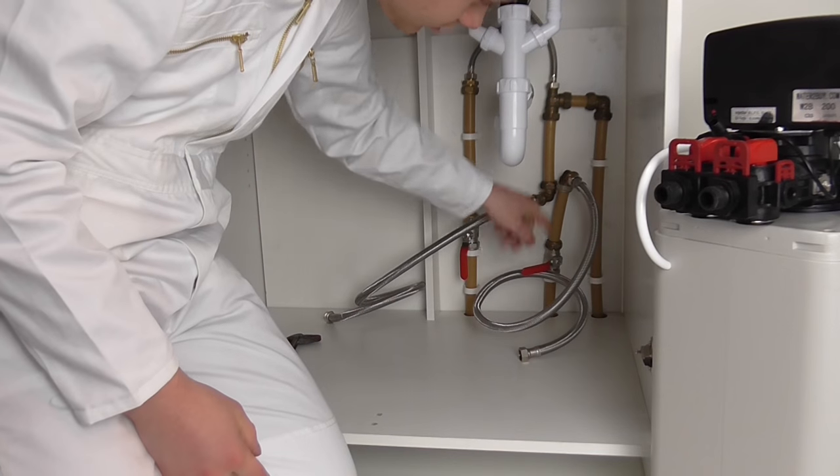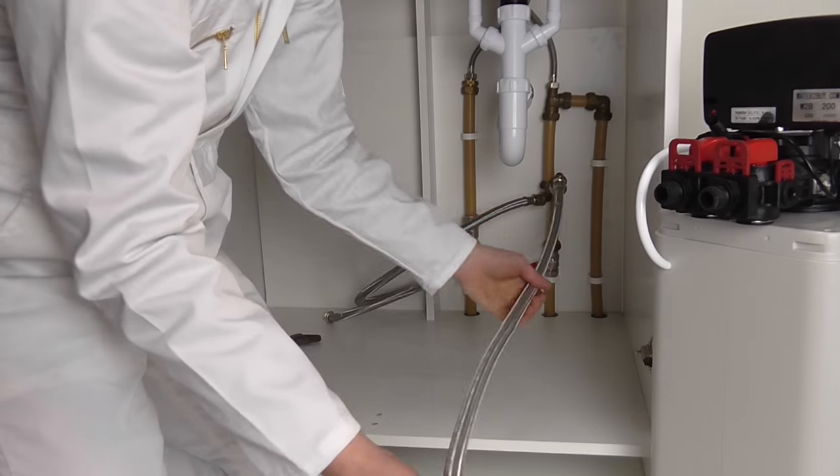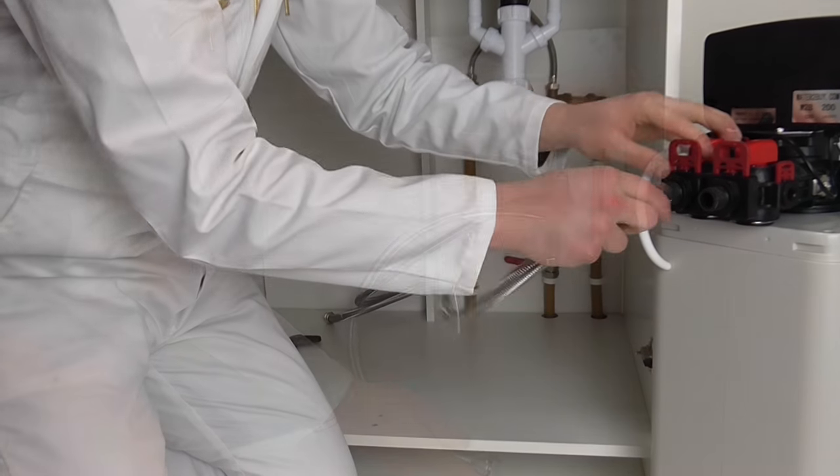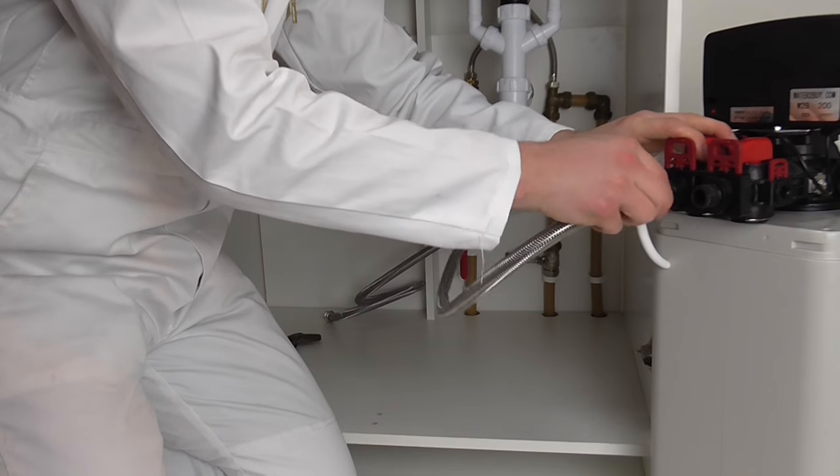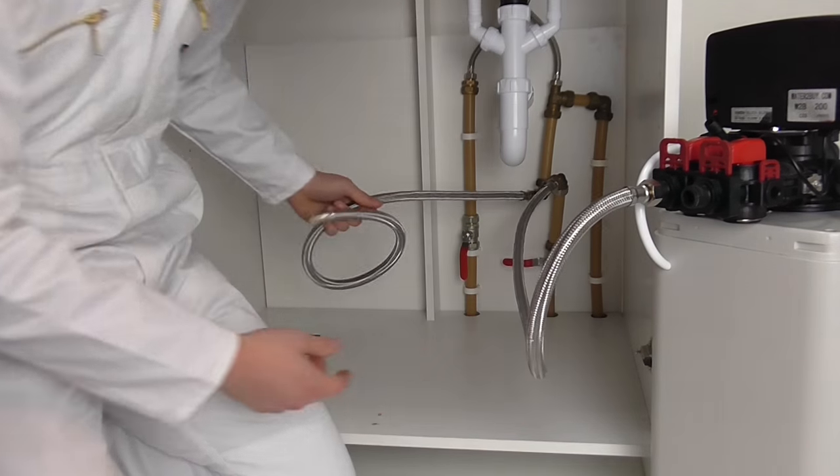Follow the hose from the inward directional flow on the water softener. It should lead to the rising mains water supply. Follow the hose from the outward directional flow. It should lead to your water system, tap or water storage.